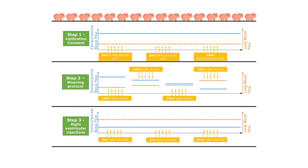Then the ECMO flow was reduced in 1 liter steps, and the saline was injected 5 times into the right atrium, followed by the right ventricle.